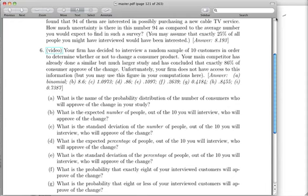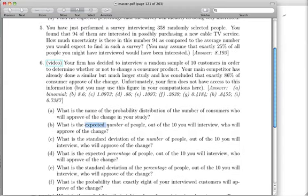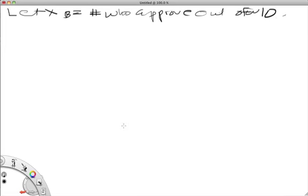Part B reads, what is the expected number of people out of the 10 who will approve of the change? Well, the key here is to recognize some words. So the two words that you need to recognize are expected and number. So expected means that you're after an expectation. And number indicates that you're after an X_B. So that expected number translates to the following. So here is, we want the expected and then the number is X_B. Now, how do we find this?